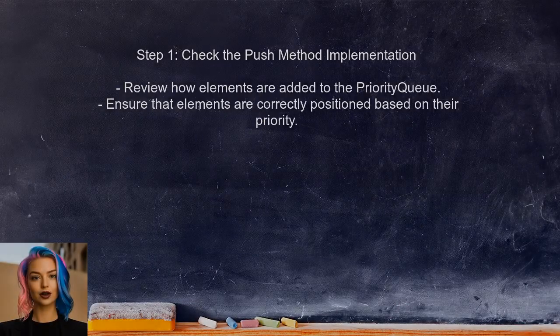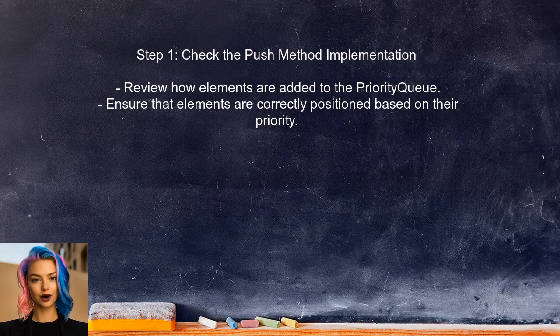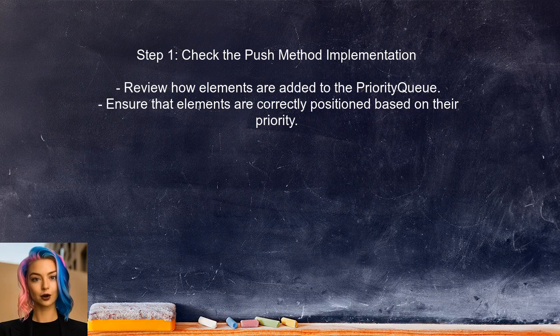To address the sorting issue in the Priority Queue, the user should first check the implementation of the push method. This method is crucial as it determines how elements are added to the queue.